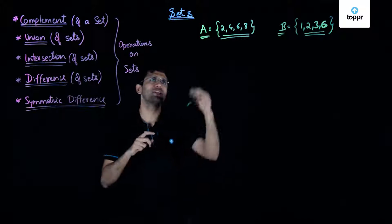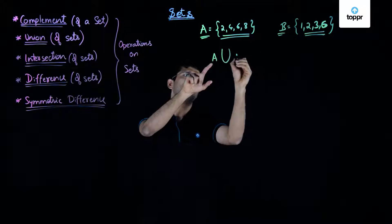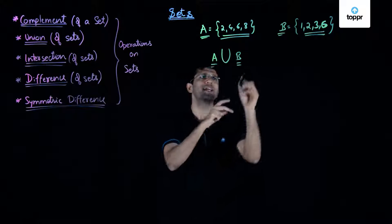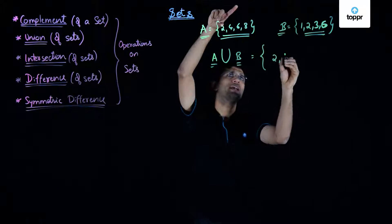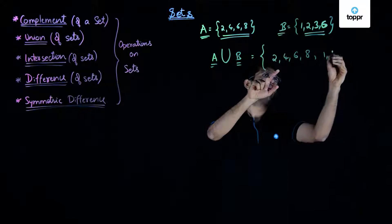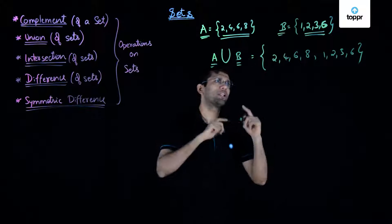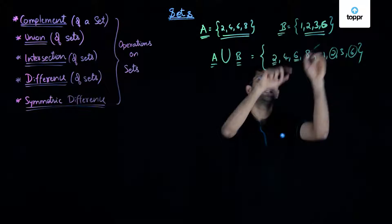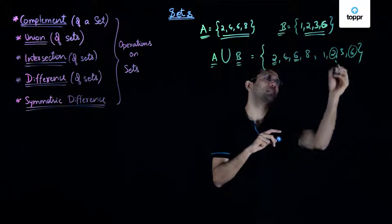Union of two sets is formed by taking all the elements of set A, adding all the elements of set B, and then discarding the common elements if any. Union of sets is denoted by the union symbol. So for sets A and B, we include all elements of A — that is 2, 4, 6, and 8 — then all elements of B — that is 1, 2, 3, and 6. The common elements 2 and 6 are repeated in both sets, so we discard the duplicates, keeping only one occurrence.